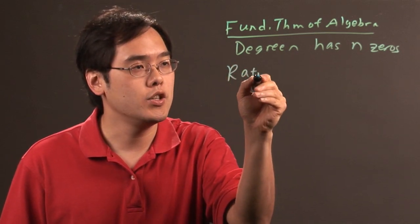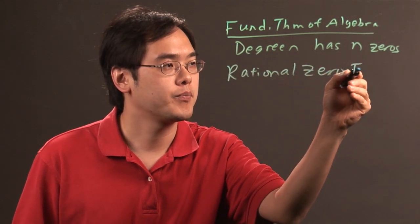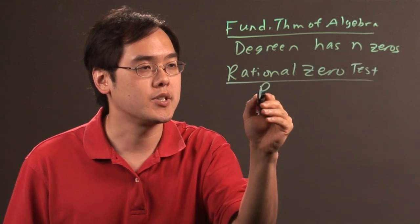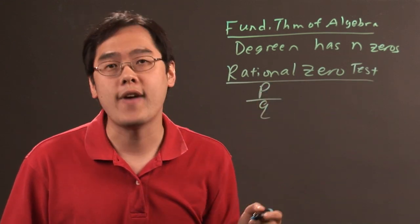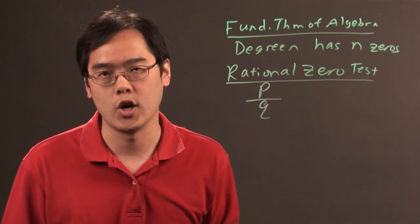One thing that you want to use in terms of a tool is the rational zero test. This is a very popular test used in pre-calculus and it's basically p over q. P are all the factors of the constant term and q is all the factors of the leading coefficient.